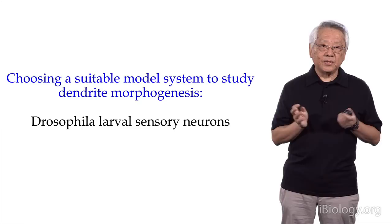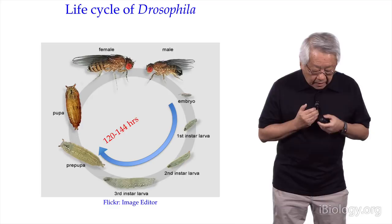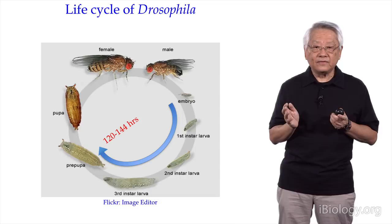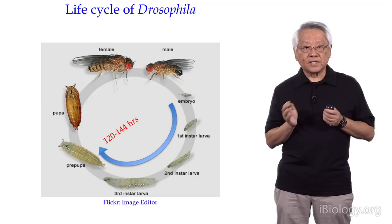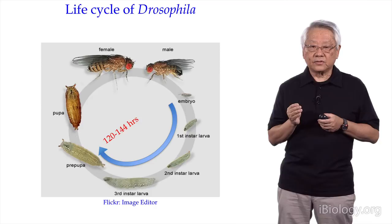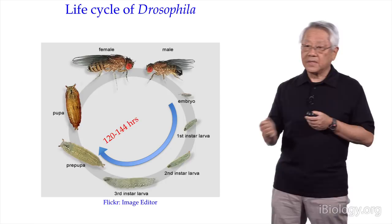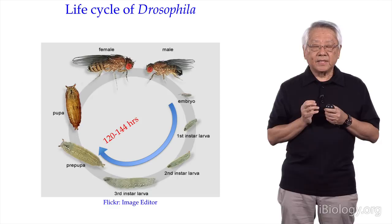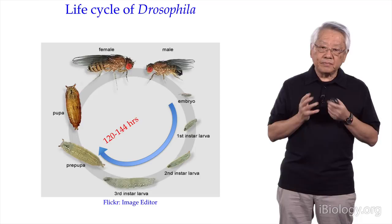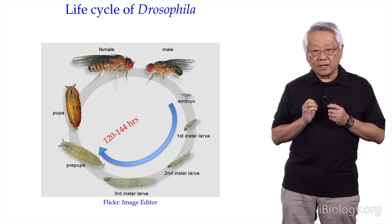Our brain has billions of neurons that can be divided into thousands of different types — no one knows exactly how many. By comparison, the nervous system of Drosophila is quite a bit simpler. An adult Drosophila has about a million neurons, and the larval form is even simpler. Even though the fly nervous system is much simpler than ours, their neurons share many of the same properties and molecules with us. So what we learn from fly can often be applicable to other animals, including humans.